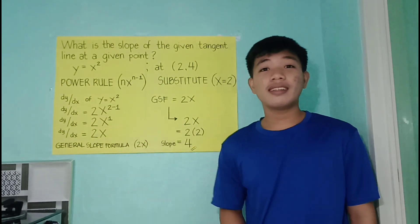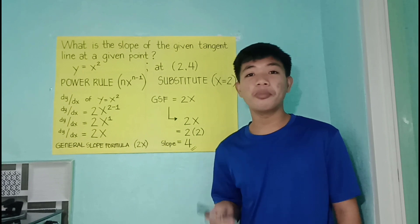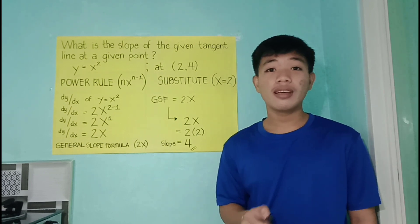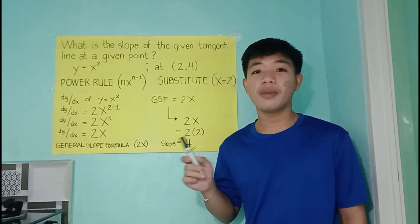So power rule states that nx raised to n minus 1, or bring down the exponent n, copy the variable x, and raise to the power of n minus 1.